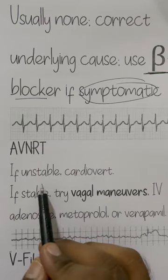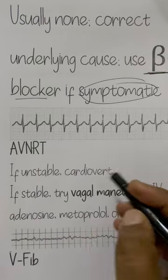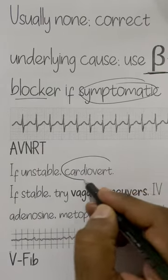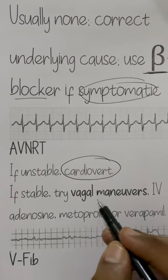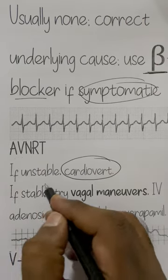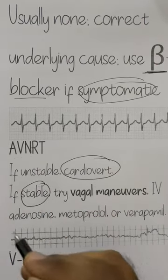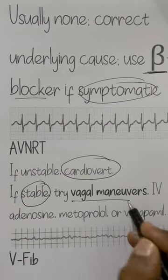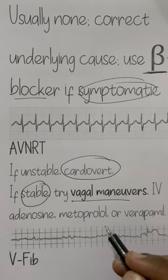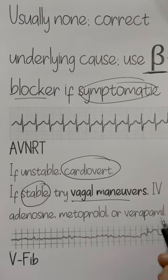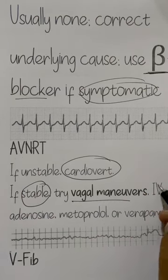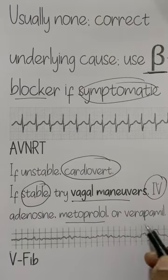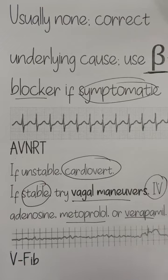How do you treat AVNRT? If the patient is unstable, cardioversion is the treatment. If the patient is hemodynamically stable, try vagal maneuvers, which bring refractoriness in the AV node. You can also give IV adenosine, metoprolol, or verapamil. Please follow me on Instagram.